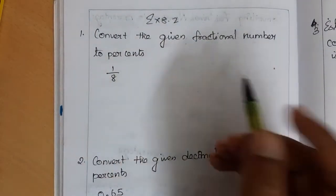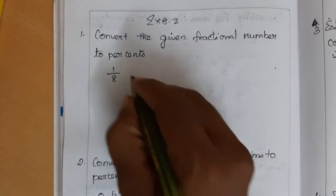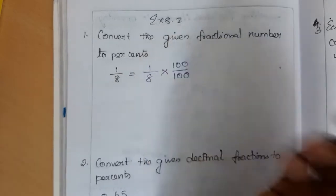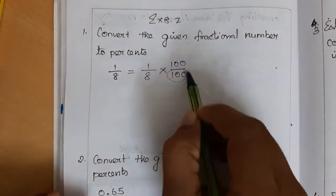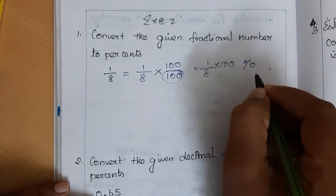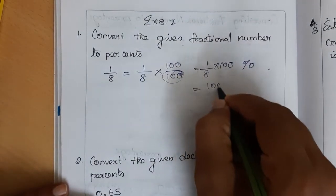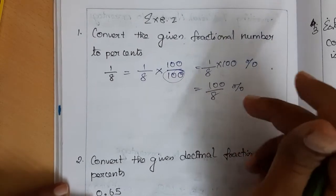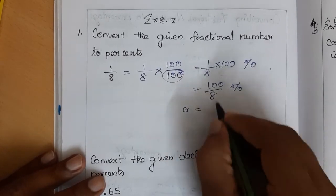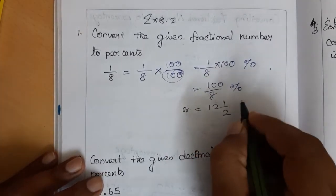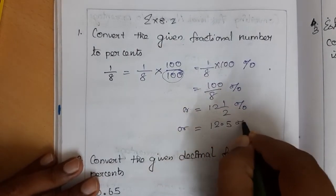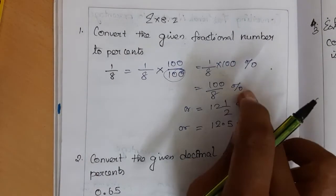Now for the exercise problem: convert the fractional number 1/8 to percent. We multiply 1/8 by 100 and divide by 100 — the out-of-100 changes to percent. So 1/8 into 100 percent equals 100/8 percent. We can leave it here, or write it as the mixed fraction 12 and 1/2 percent, or in decimal as 12.5 percent.